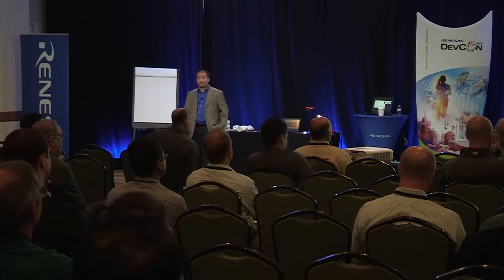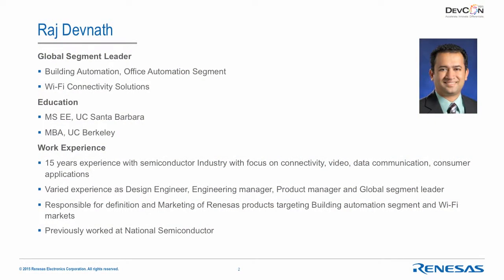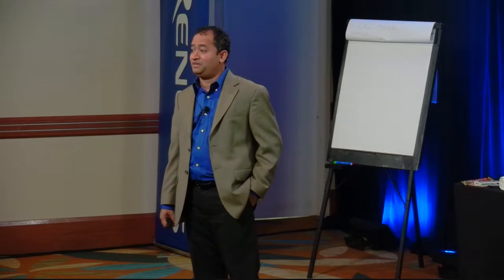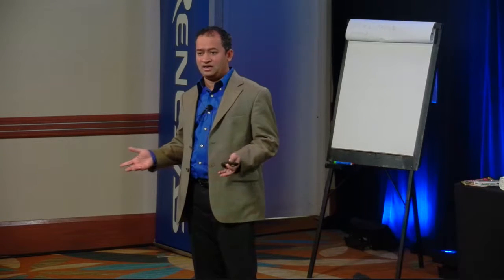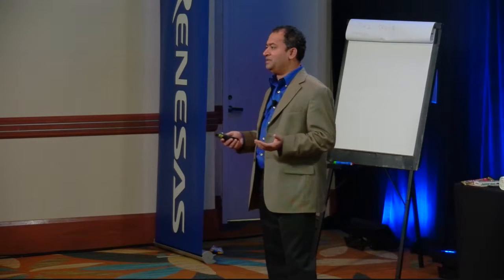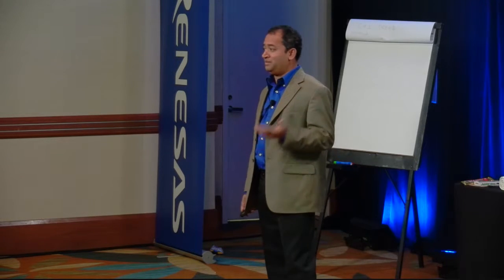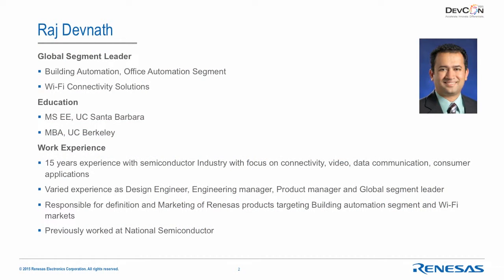A bit about myself. My name is Raj Devanath. I'm the global segment leader for building and office automation here at Renesas. I also handle Wi-Fi marketing, creating products and solutions for these end markets. I have more than 15 years of experience in building and home automation, connectivity, video, and consumer electronics. I've been a design engineer, engineering manager, product manager, and more recently a global segment leader. I have an MS from UC Santa Barbara and an MBA from UC Berkeley.